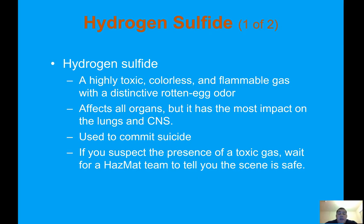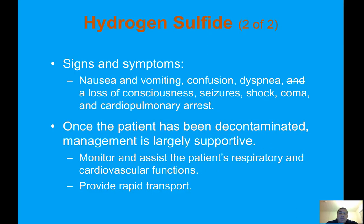Hydrogen sulfide is a highly toxic, colorless, flammable gas with a distinctive rotten egg odor. It affects all organs but has the most impact on the lungs and CNS and has been used to commit suicide. If you suspect the presence of a toxic gas, wait for the hazmat team to tell you the scene is safe. Signs and symptoms include nausea and vomiting, confusion, loss of consciousness, seizures, shock, coma, and cardiopulmonary arrest. Once the patient has been decontaminated, management is largely supportive — monitor respiratory and cardiovascular functions and provide rapid transport.